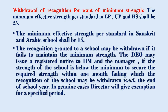The recognition granted to a school may be withdrawn if it fails to maintain the minimum strength. The DEO may issue a registered notice to the HM and the manager. If the strength of the school is below the minimum, they must secure the required strength within one month, failing which the recognition of the school may be withdrawn with effect from the end of the school year.